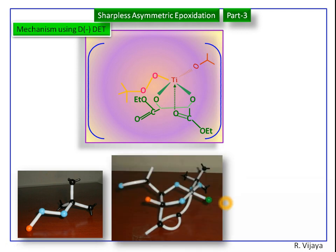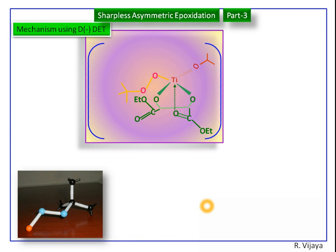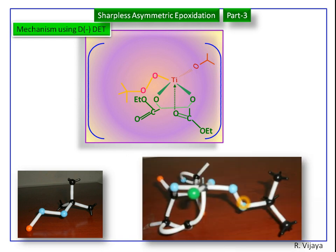This is a very interesting complex. This is the front side view. This is the backside view. In this peroxide, one oxygen atom is at the top, another oxygen atom is at the bottom.